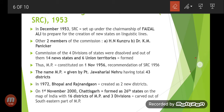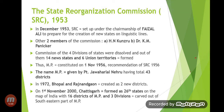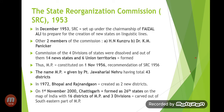On 1st November 2000, Chhattisgarh (36 Garh) was formed as the 26th state on the map of India. It was carved out with 16 districts of MP and 3 divisions from the southern-eastern part of MP.